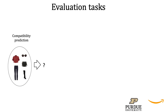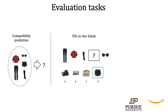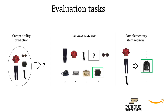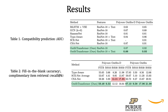To evaluate our framework, we consider three established tasks from the literature. The first is outfit compatibility prediction, evaluated using AUC. The second is the Fill-in-the-Blank task, where the goal is to select the best item matching the outfit among a fixed set of candidate choices, evaluated using accuracy. The third is complementary item retrieval, where the goal is to choose the best item from the entire database, evaluated using recall at top-k. We evaluated our method on the Polyvore Outfits dataset on both disjoint and non-disjoint splits. As seen in Table 1, our model outperforms state-of-the-art methods on the compatibility prediction task, and on the FITB and complementary item retrieval tasks as shown in Table 2.